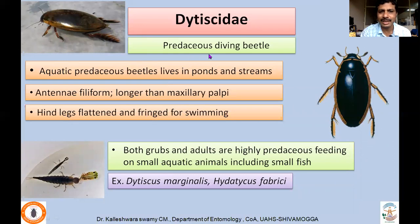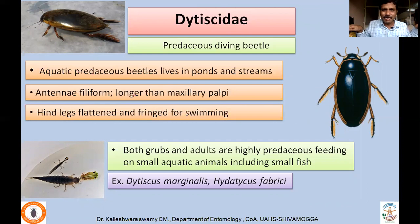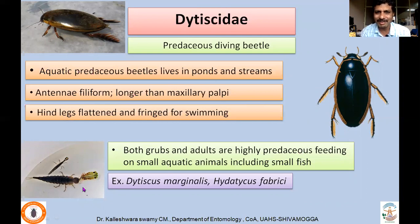There is one more family called Dytiscidae, commonly called predaceous diving beetles. They are aquatic predaceous beetles living in ponds and streams. All three Adephagan families we are studying are actually predaceous. Antennae are filiform, longer than the maxillary palpi. Hindlegs are flattened and fringed for swimming — natatorial-like; the hindlegs are flat with fringes of hairs that push water back and propel forward. Both grubs and adults are highly predaceous, depending on small aquatic animals including small fish. Common species include Dytiscus marginalis and Ideaticus fabrici.